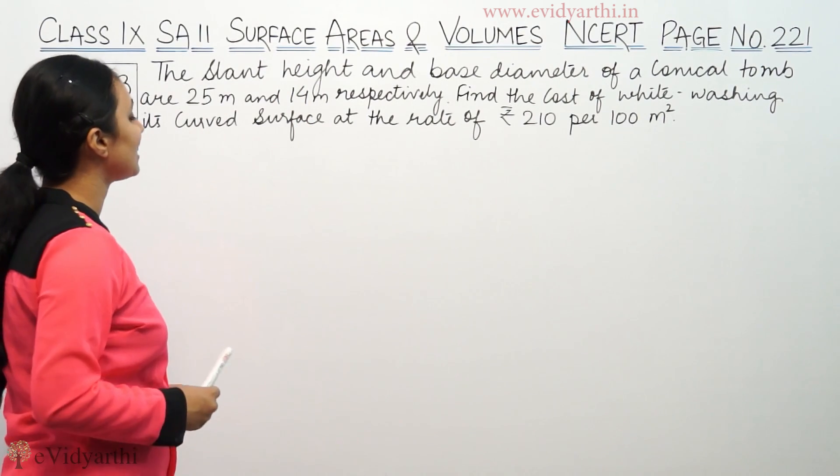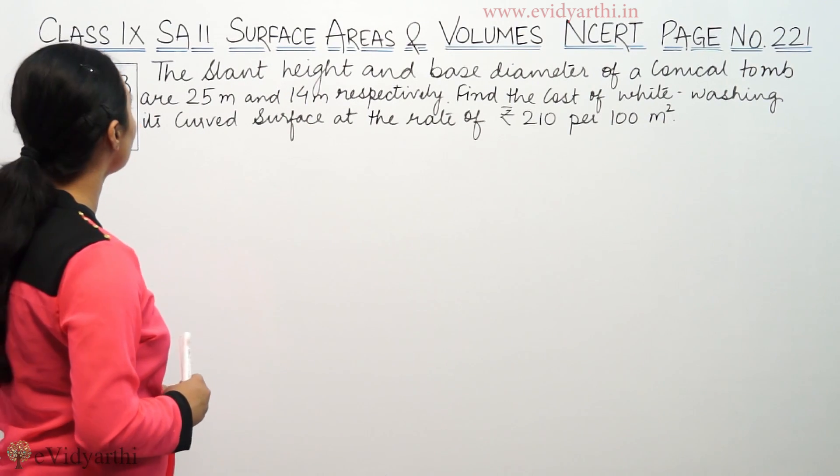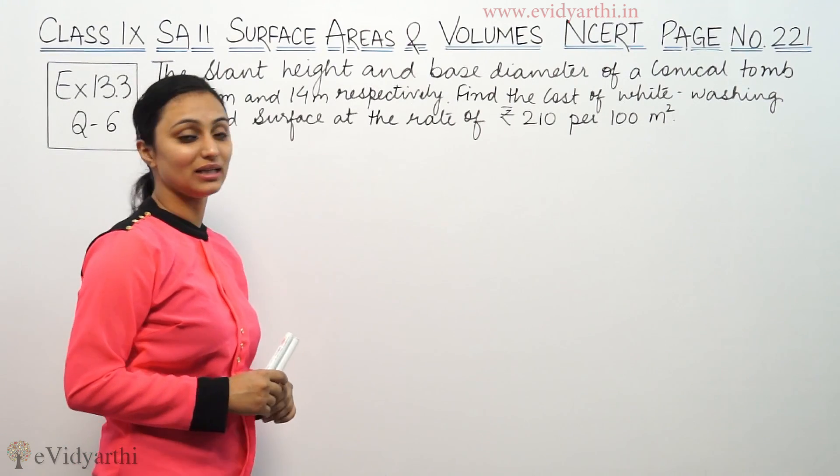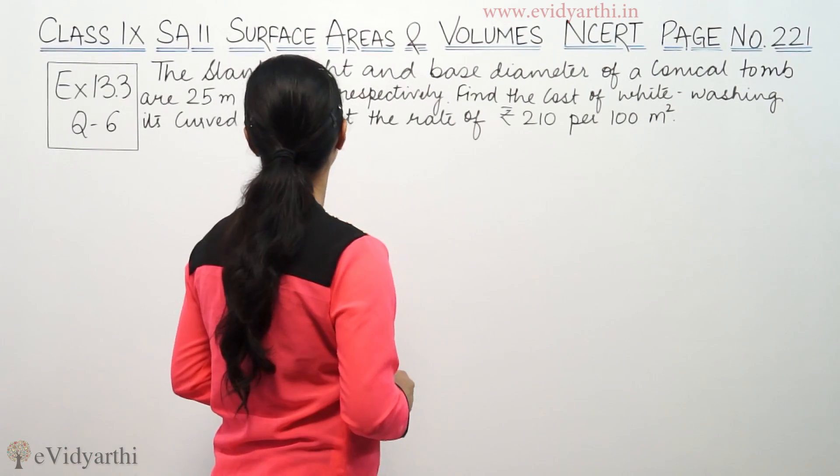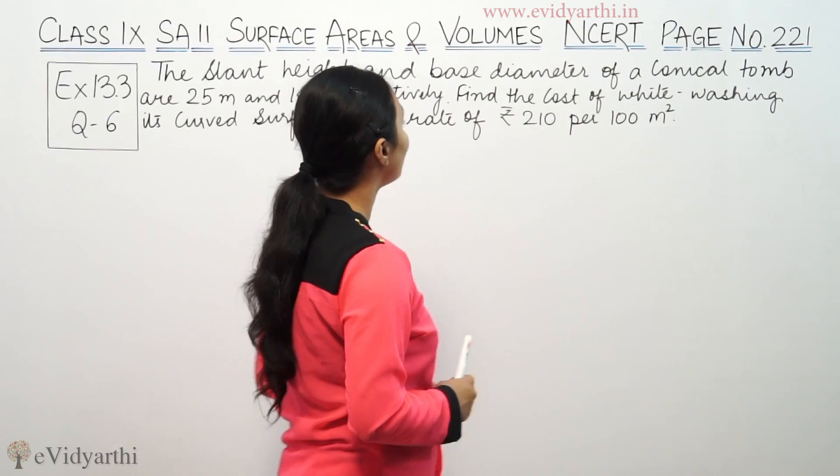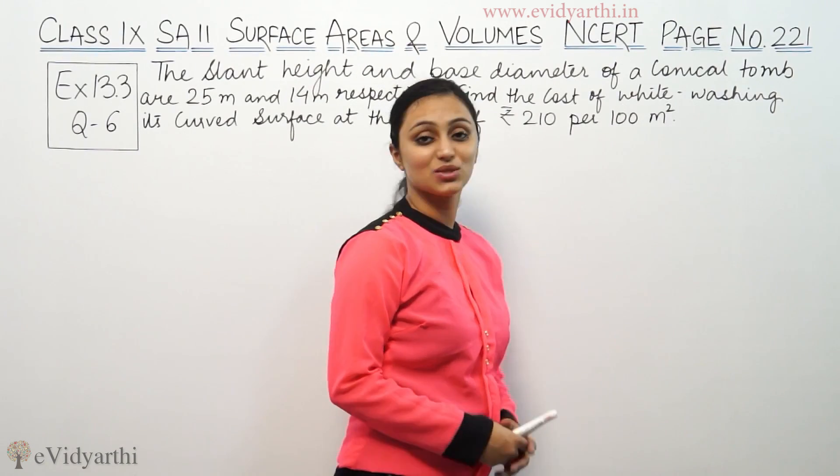The slant height and base diameter of a conical tent are 25 and 14 meters respectively. Find the cost of whitewashing its curved surface area at the rate of 210 rupees per 100 meters square.